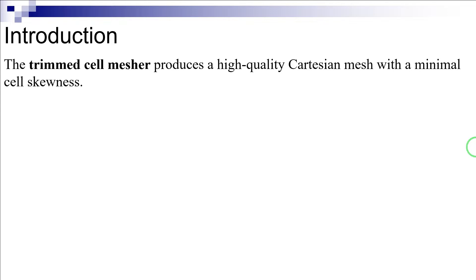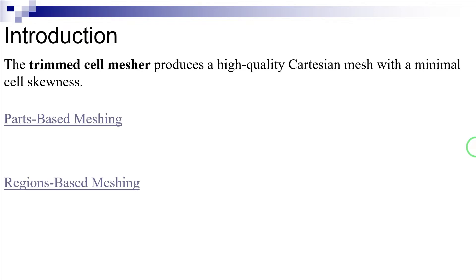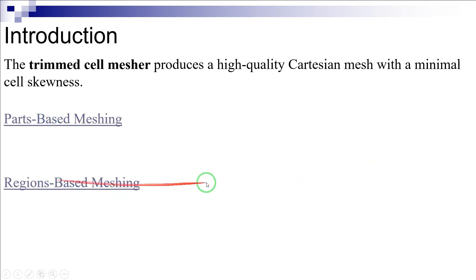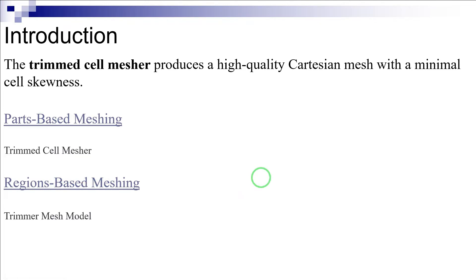In Star CCM+, the trim cell mesher is available for both the parts-based meshing and regions-based meshing approaches. In the former, it is referred to as the trim cell mesher, while in the latter, it is called the trimmer mesh model.